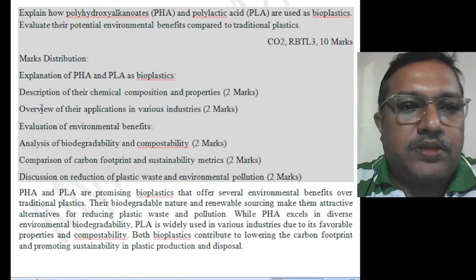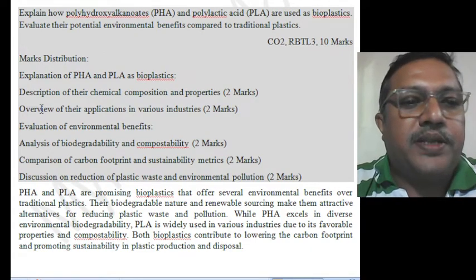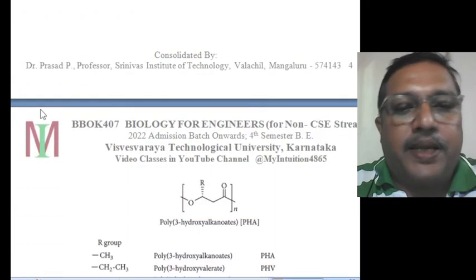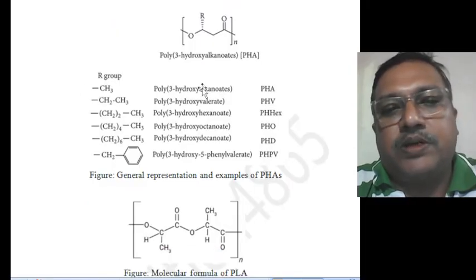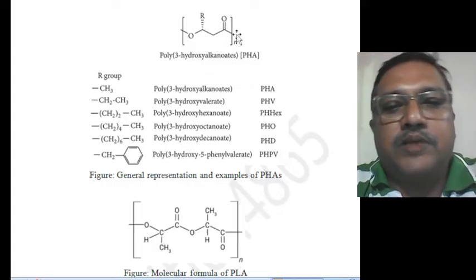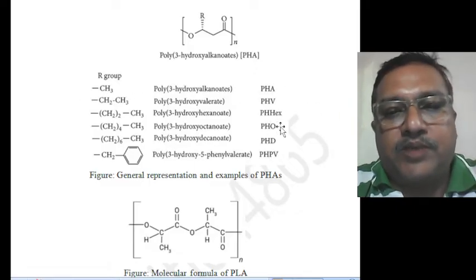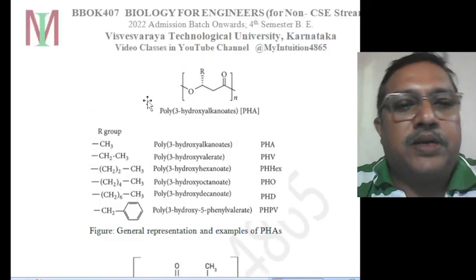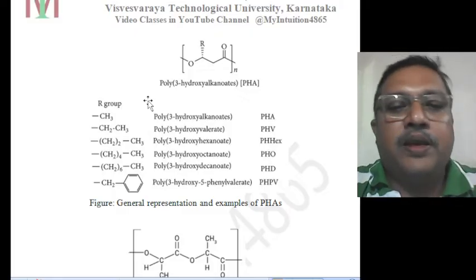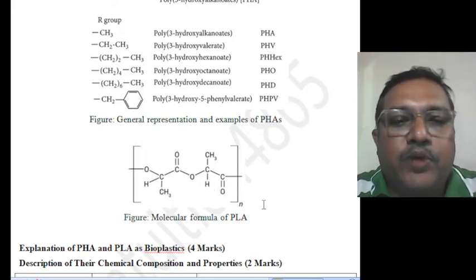The question is: explain how polyhydroxyalkanoate and poly lactic acid are used as bioplastics and evaluate their potential environmental benefits compared to traditional plastics. PHA and PLA — know their molecular structures. PHA is a general name covering variants like PHB, PHV, PHX, PHO, PHD — all of the same category used in fine-tuning properties. PLA, poly lactic acid — the structure and molecular formula are given here.